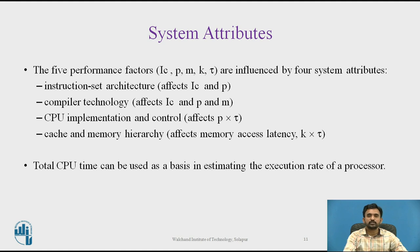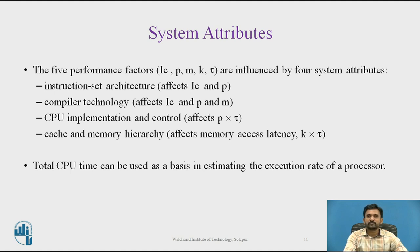The next topic is system attributes. The five performance factors are: number of instructions (IC), processor cycle time (p), memory access time (m and k), and clock cycle constant time (τ). These are influenced by four system attributes: instruction set architecture, compiler technology, CPU implementation and control, and cache and memory hierarchy.